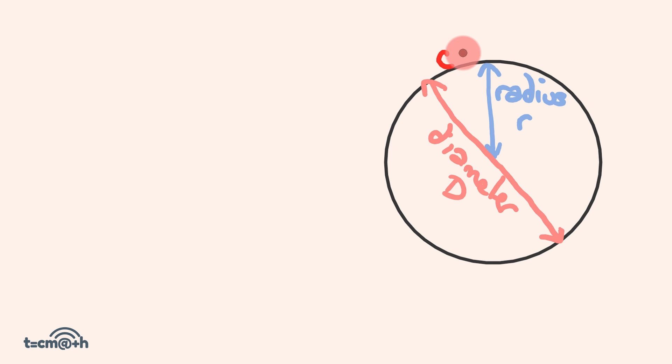We also have this distance around the outside, which is what we're going to be working out, which is the circumference, that is this distance going right around the outside of our circle here, and this is often written as C.